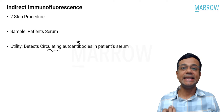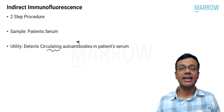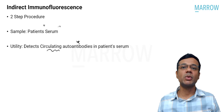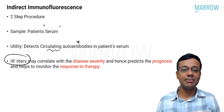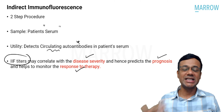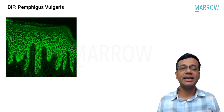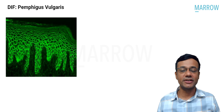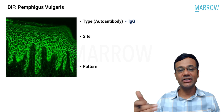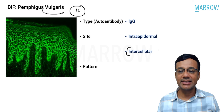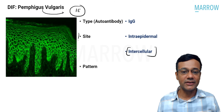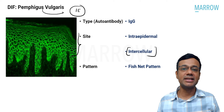In direct immunofluorescence, the sample is the patient's skin; in indirect immunofluorescence, the serum is used to detect circulating autoantibodies. Direct immunofluorescence also provides a titer that correlates with disease severity, prognosis, and response to therapy — titers should reduce with successful treatment. In pemphigus vulgaris, deposits are IgG and C3, located intraepidermal, with intercellular deposition. This characteristic pattern is referred to as the fishnet pattern.